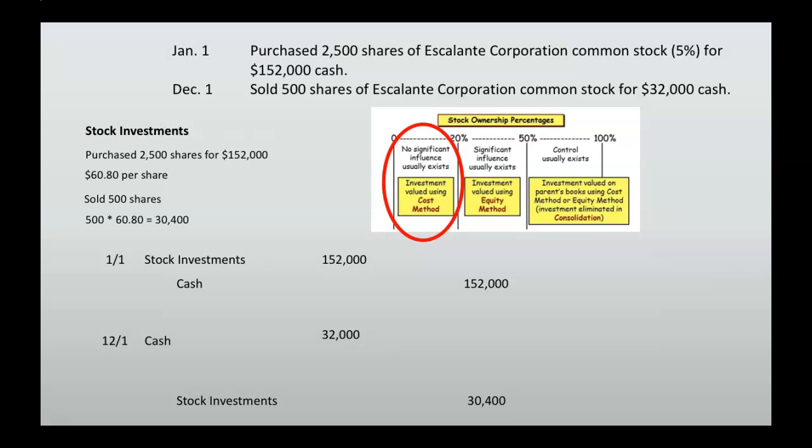You'll notice now that your debits and credits don't equal, so we need another account to make it balance. We sold stock investments on our books that were worth $30,400, but we got people to pay us $32,000 for it. That difference is going to be a gain on the sale of stock investments — the difference between the $32,000 cash received and the $30,400 book value of the stock investments sold.